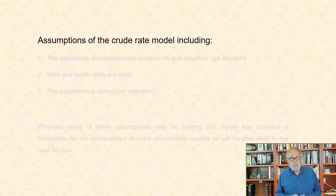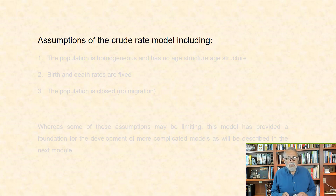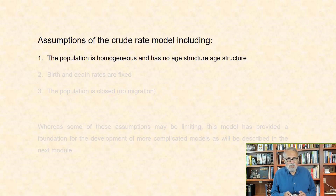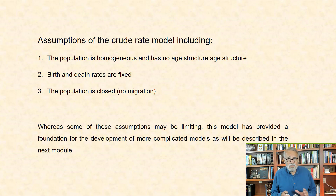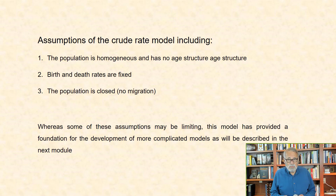There are a number of assumptions of the crude rate model or balancing equation, including: 1) the population is homogeneous, that is it has no age structure; 2) the birth and death rates are fixed; and 3) the population is closed to migration. Whereas some of these assumptions may be limiting, this model has provided a foundation for the development of more complicated models, as will be described in subsequent modules.